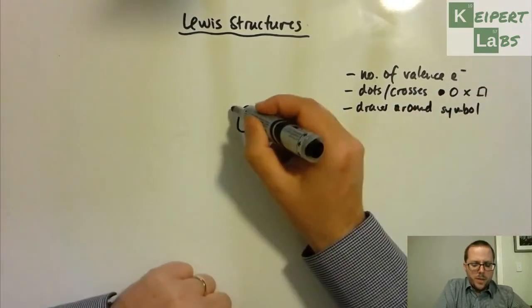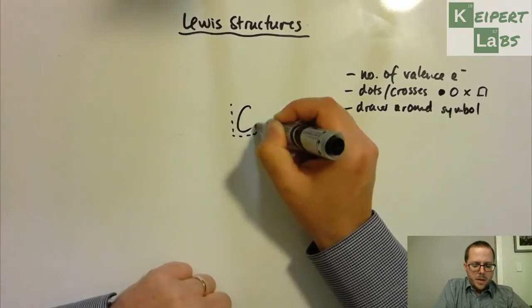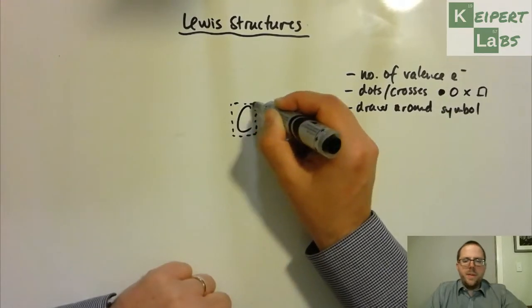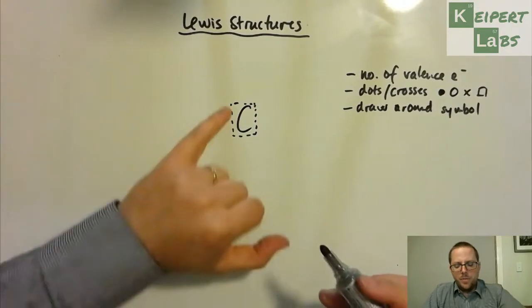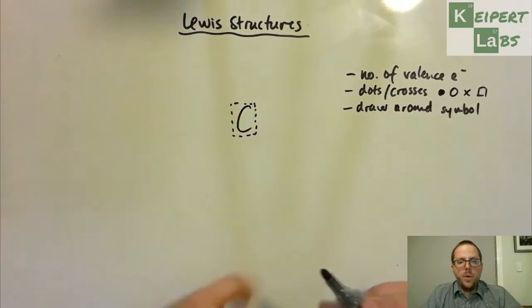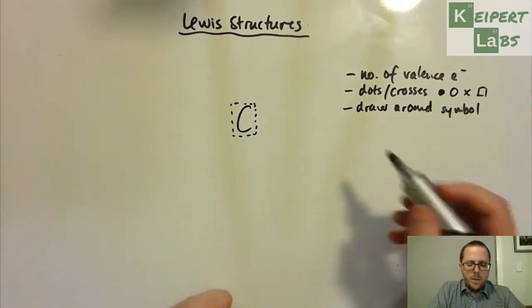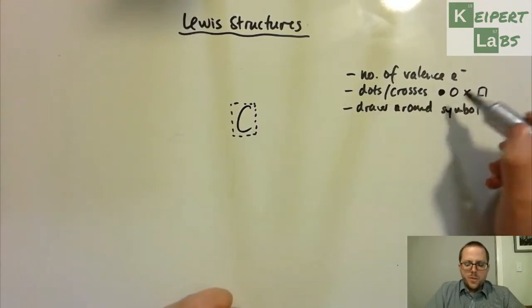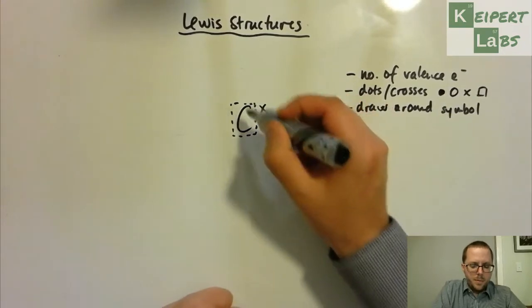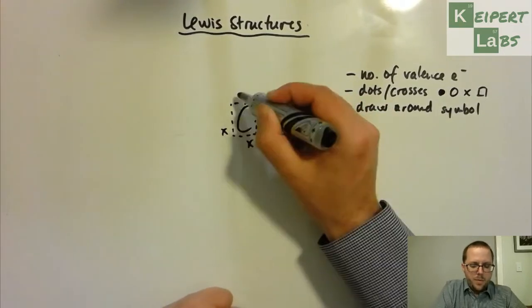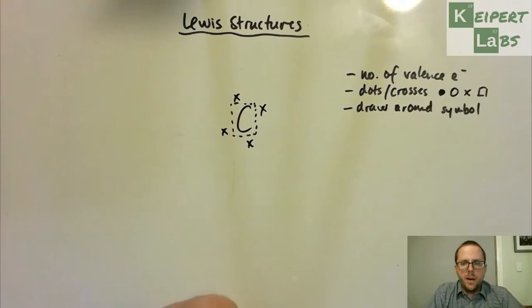And then we draw around the symbol. So what I want you to do, what we're going to do is we're going to imagine that there is like a box that's written around this symbol, and that we're going to be drawing along the four edges of that box, so that we're always working at right angles. I've got four valence electrons, so I'm going to use crosses to represent the valence electrons of carbon. And I've got four crosses to write around it.